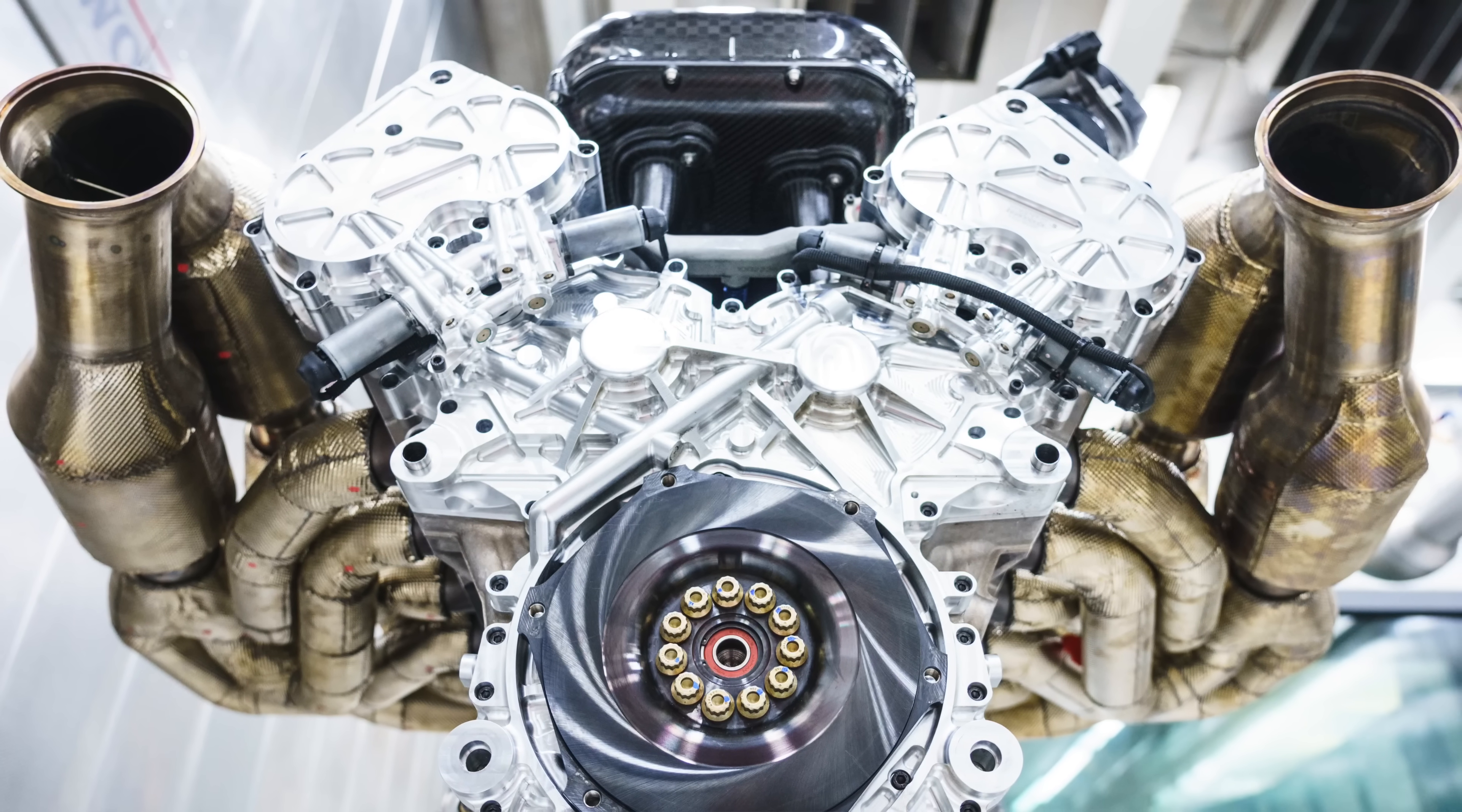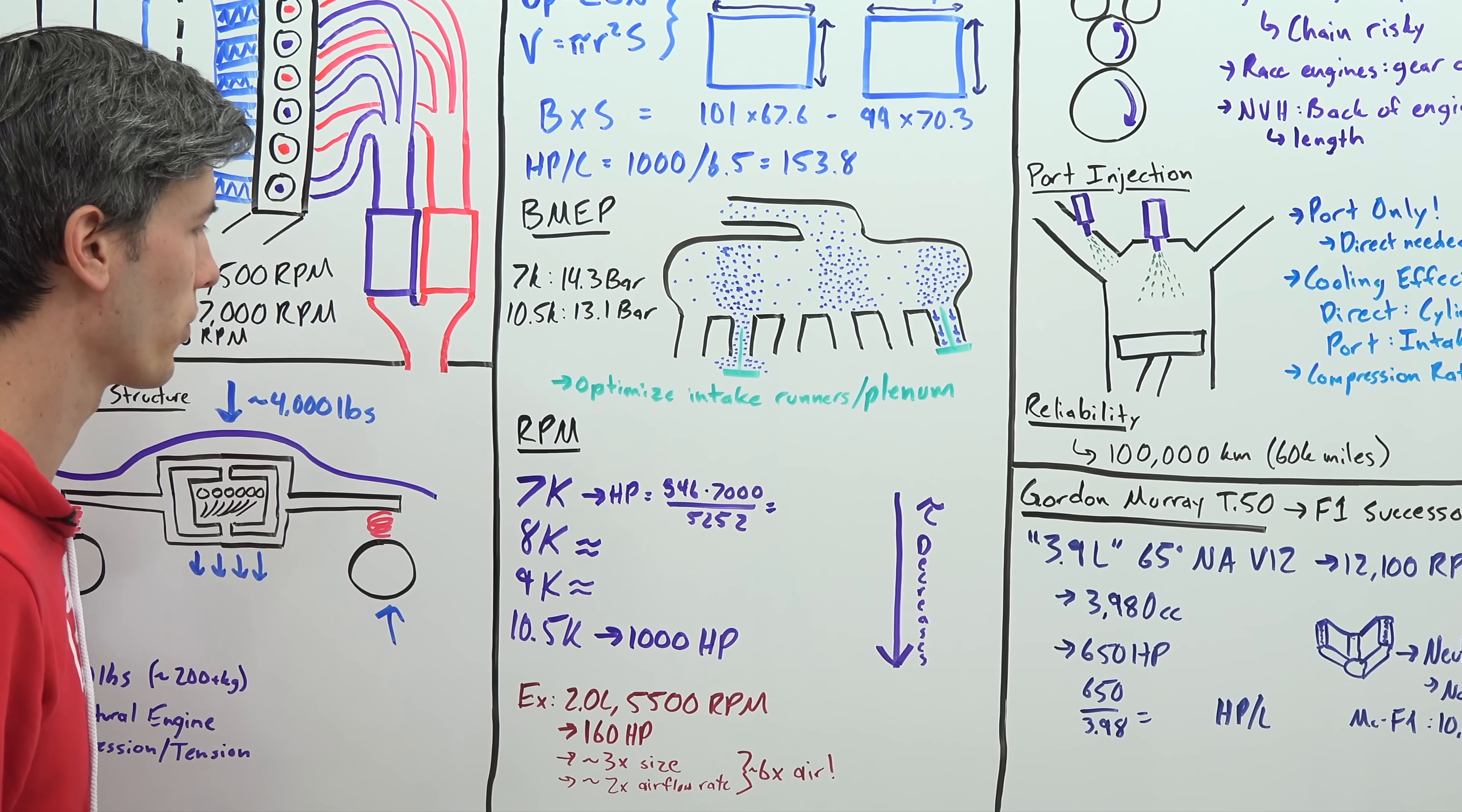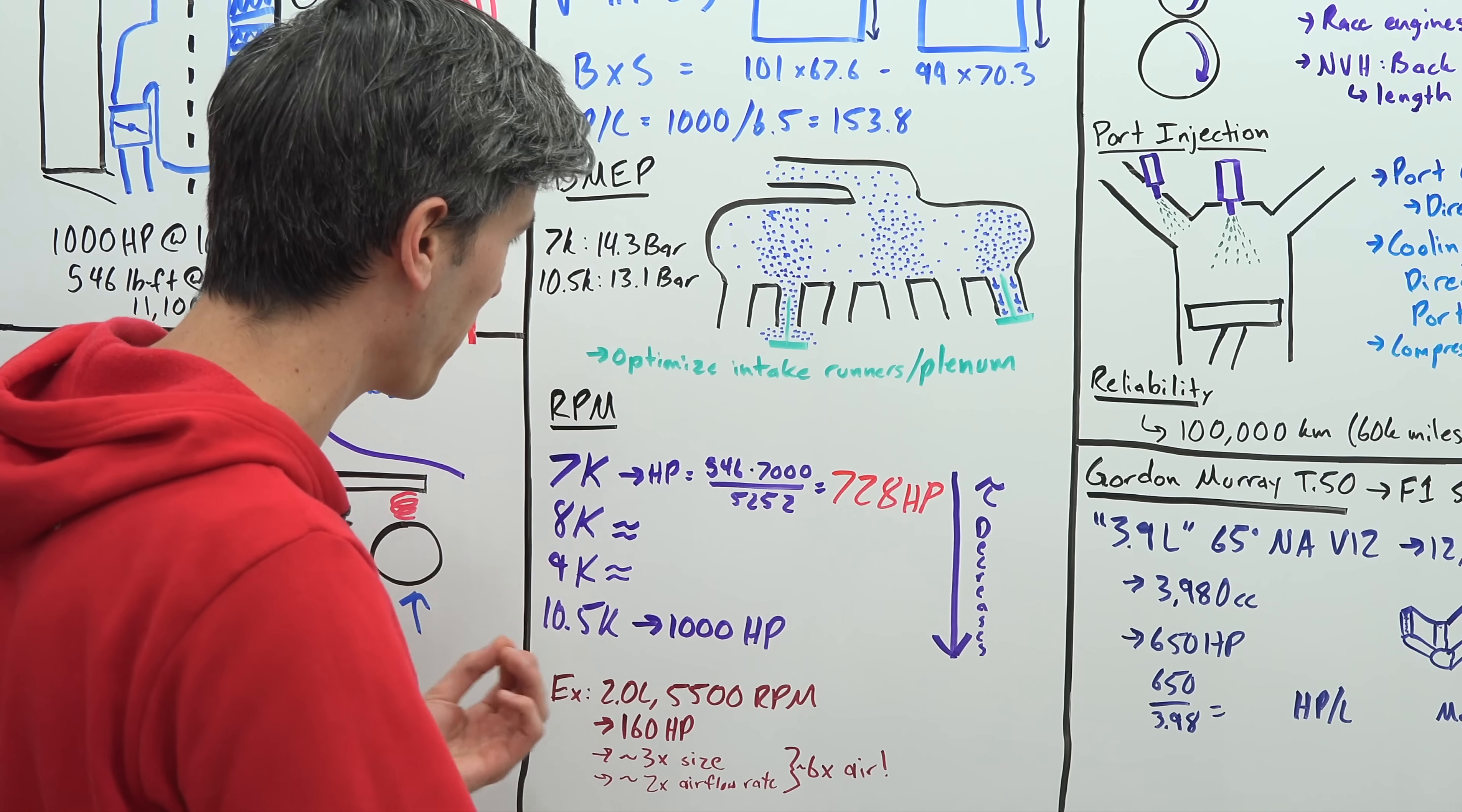Moving on to our third element here, rpm. So power is a function of rpm, if you hold everything else constant and you're able to rev higher you will make more power. And so for this vehicle we are making 546 pound-feet of torque at 7,000 rpm. We can calculate how much power that is: 546 times 7,000 rpm divided by 5,252 and that gives us 728 horsepower at 7,000 rpm.